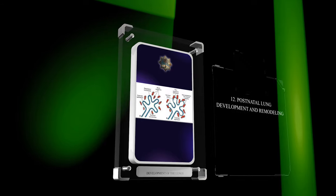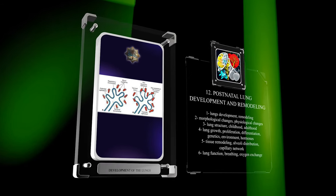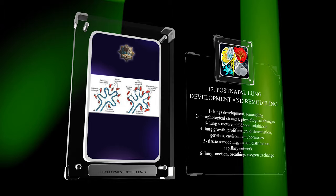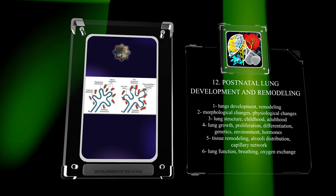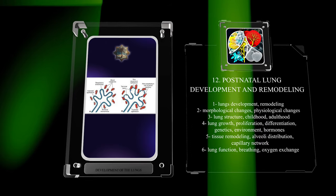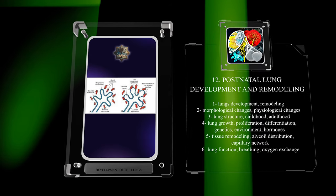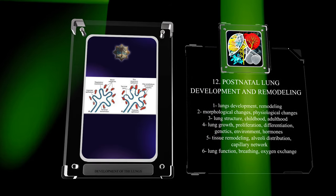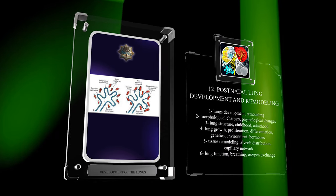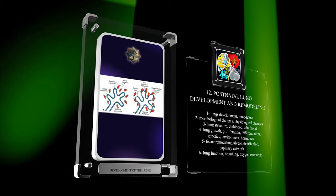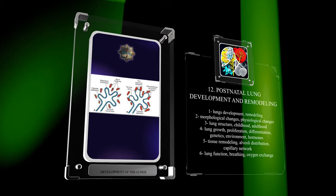The ongoing development and remodeling of the lungs after birth involve morphological and physiological changes that shape the lung structure throughout childhood and adulthood. Lung growth primarily occurs through the proliferation and differentiation of existing cells, regulated by genetics, environment, and hormones. Tissue remodeling involves changes in alveoli distribution and the development of a complex capillary network, adapting the lungs' function to meet breathing and oxygen exchange demands.